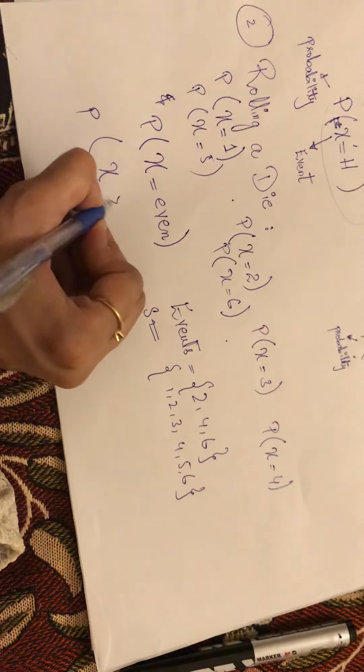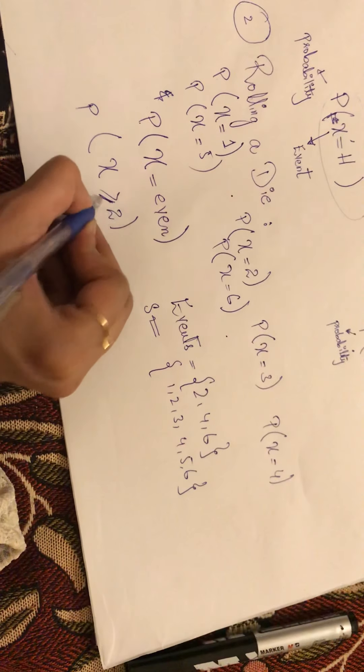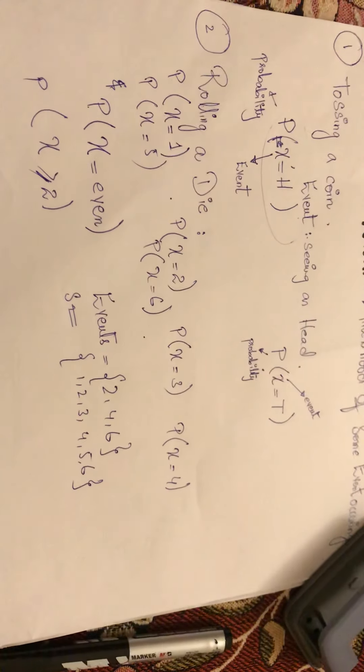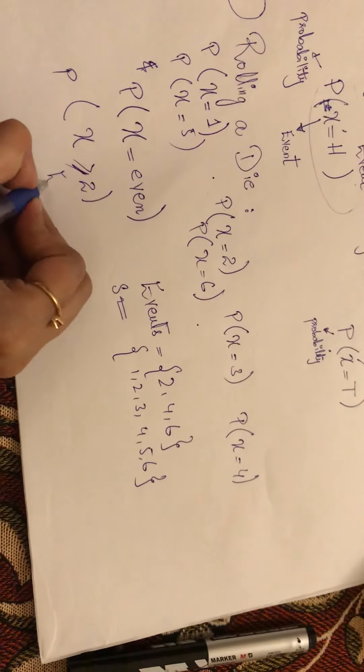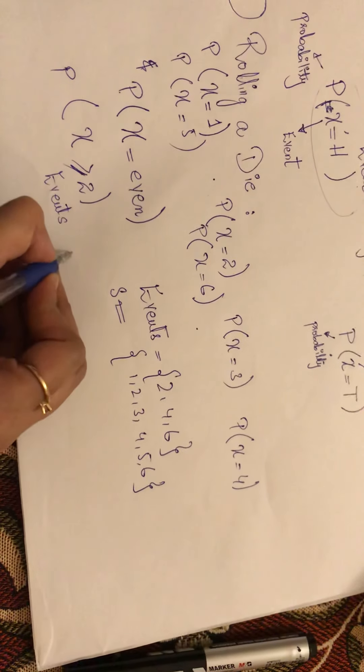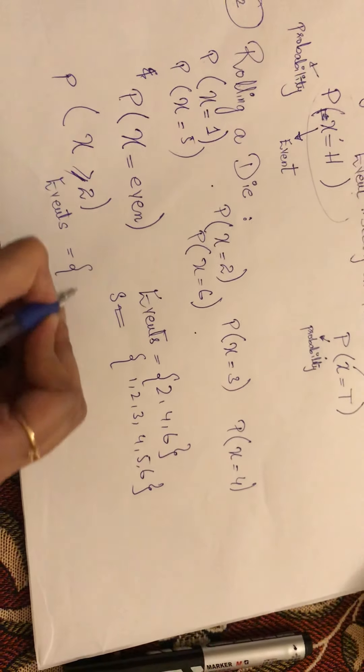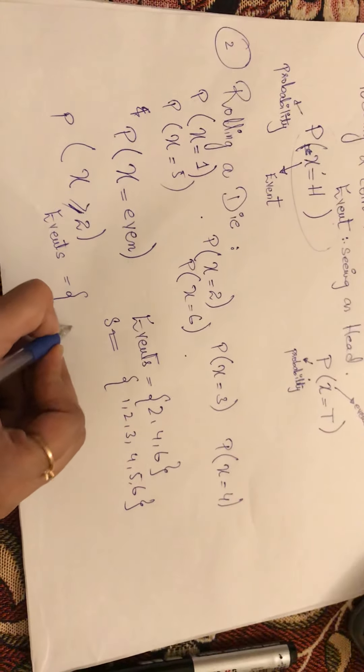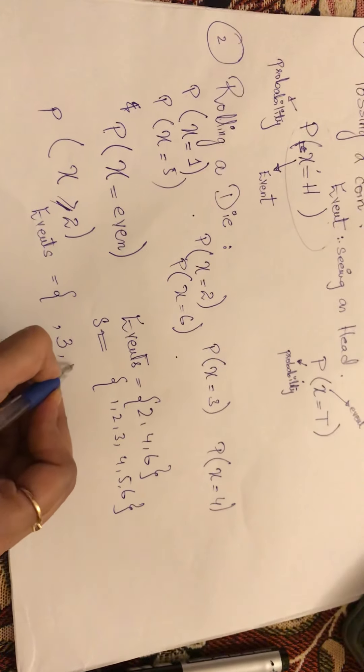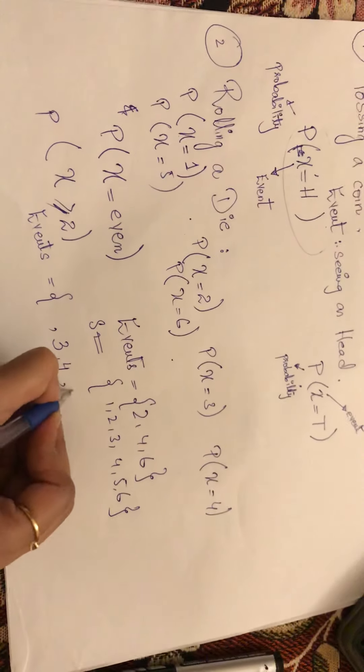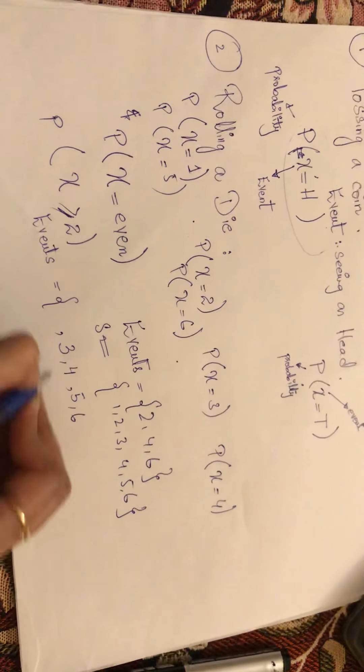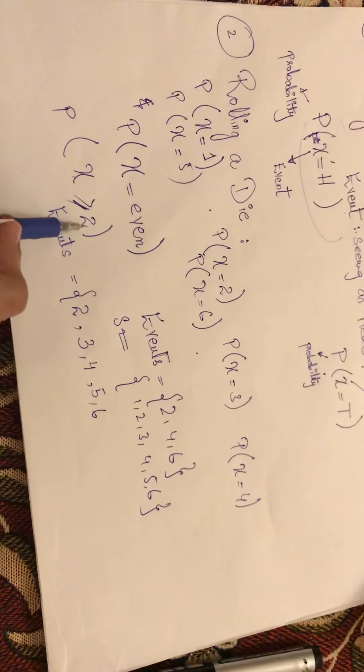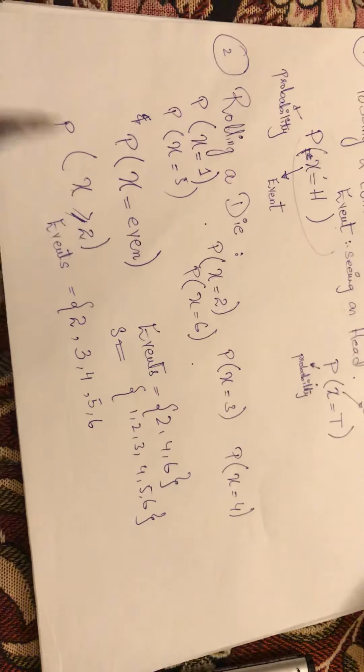Now let's discuss another example: P(X) is greater than or equals to two. So the event is that the numbers you have achieved are greater than or equal to two. I just want to question you right now - will two be included or not? That's actually a question. If you say yes, two will be included, you are absolutely right, because it says the event is two including two and the numbers greater than two.